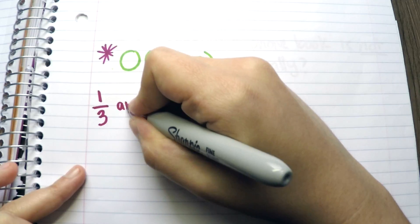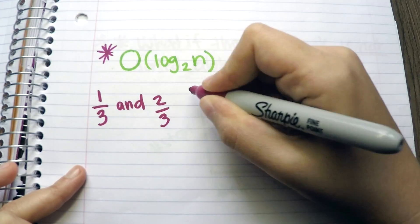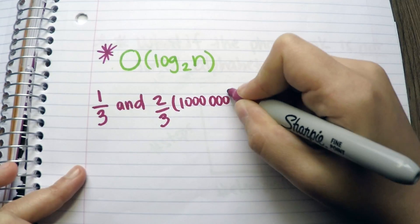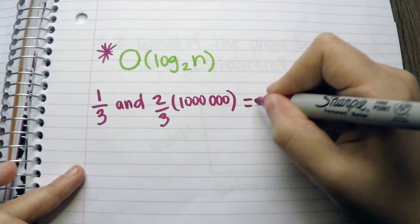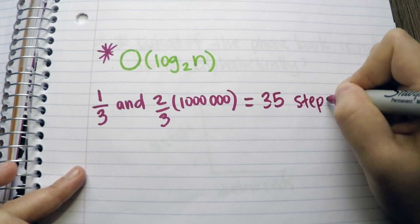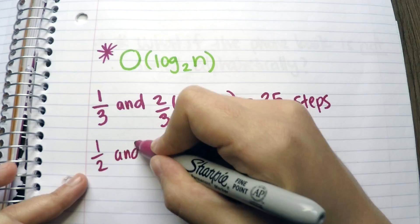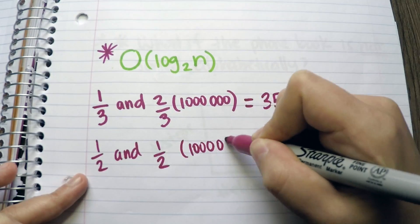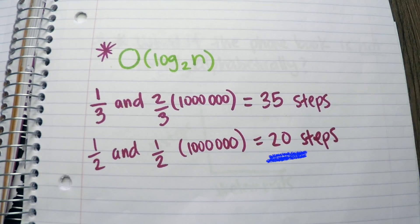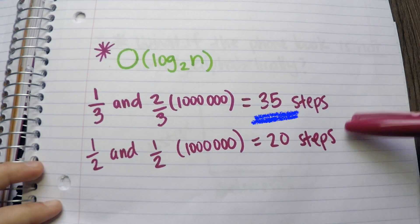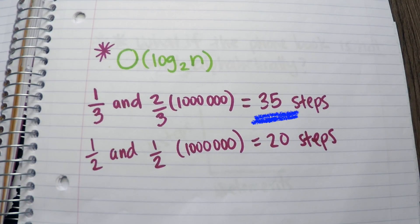It wouldn't matter if we split the phone book in one-third and two-thirds, because that would take about 35 steps for one million names. As opposed to what we did, splitting the book in half each time, which takes 20 steps for a million names. Twenty steps are not too far from 35 steps, and that's the power of logarithmic complexity.